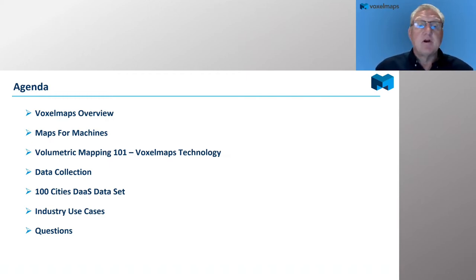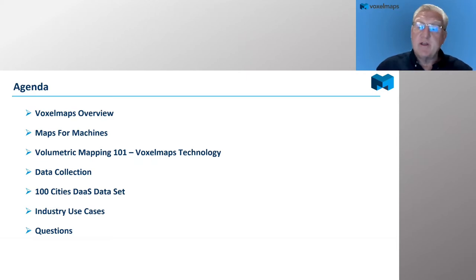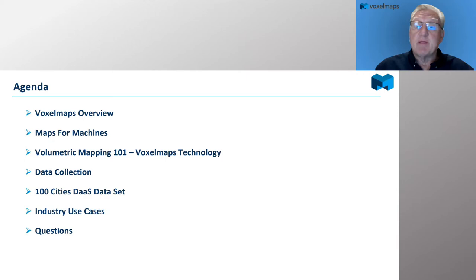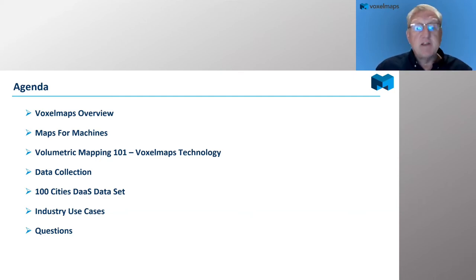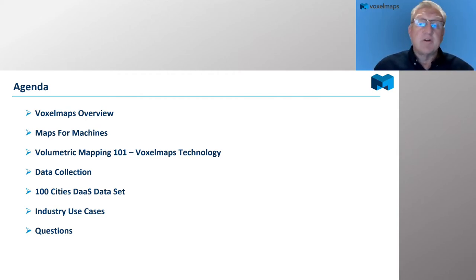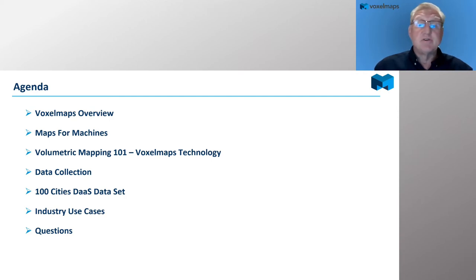Peter is going to give us an overview of VoxelMaps and talk about maps for machines, which is a new concept for many attendees. Peter will explain how we collect and process data, geared towards machine learning. We'll cover volumetric mapping 101, our data collection tools and systems, and then a briefing on the 100 cities DAS data set that we're embarking on — extensive data collection across the US. I'll then review some industry use cases, followed by Q&A.